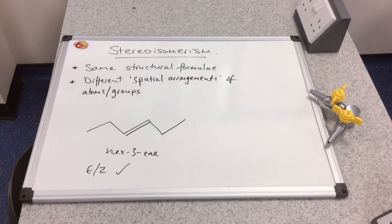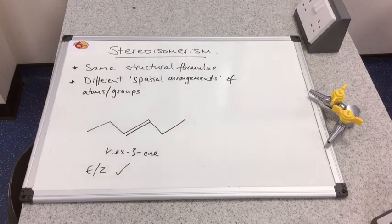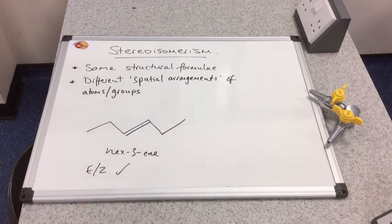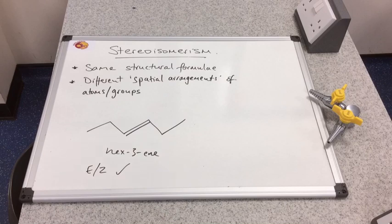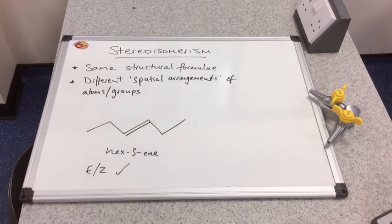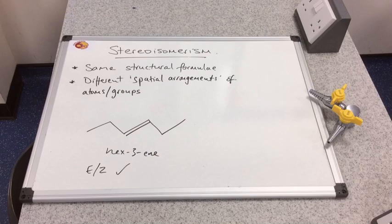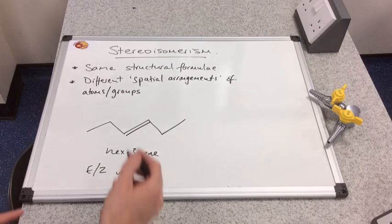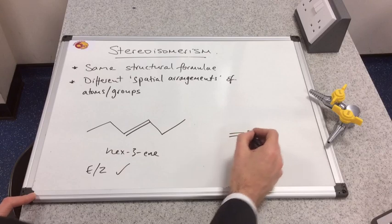Now we've established that E/Z isomerism is possible. You might be asked to say why, and then you could say because each carbon of the double bond contains different groups. So now we've established that E/Z is possible. We might have to draw out the two isomers and label them correctly. You might find it a little bit difficult to see in that form. Easiest thing to do is to make the double bond horizontal.